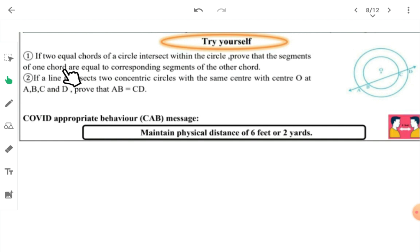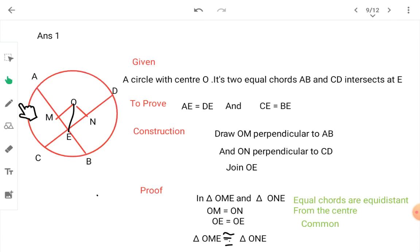Now you have some questions. If two equal chords of a circle intersect within the circle, prove that the segments of one chord are equal to the corresponding segments of the other chord. If two equal chords are intersecting inside the circle, then the segments formed are also correspondingly equal.